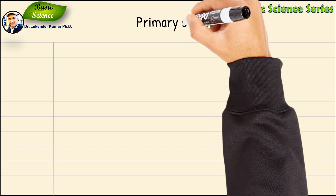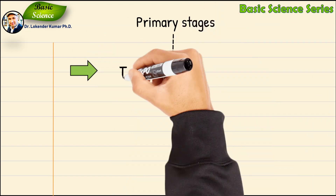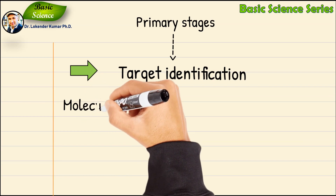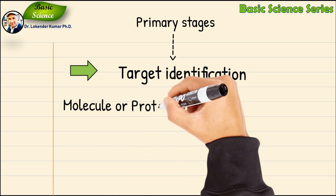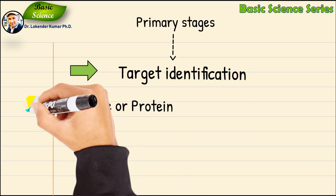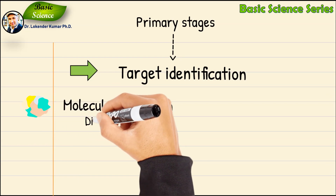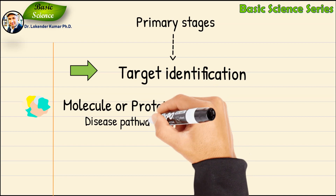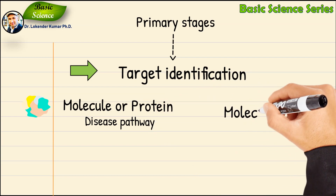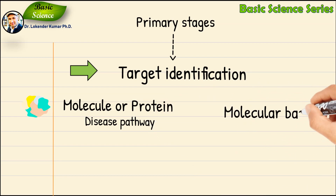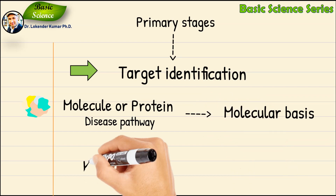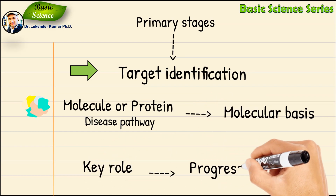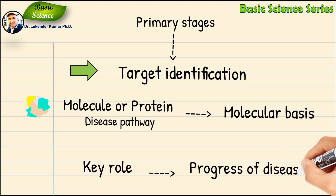Here are the primary stages of the drug discovery process. First is the target identification. The first step is to identify a molecule or a protein involved in a disease pathway that serves as the target. The identification process can be achieved through studying the molecular basis of the disease — this way a key protein is identified that plays a key role in the progression of the disease.